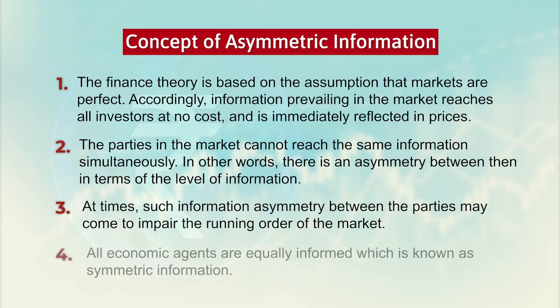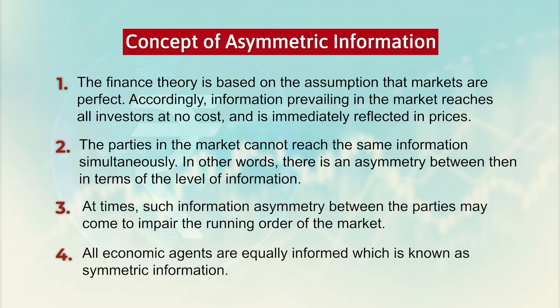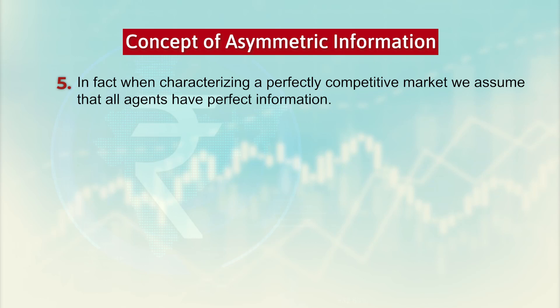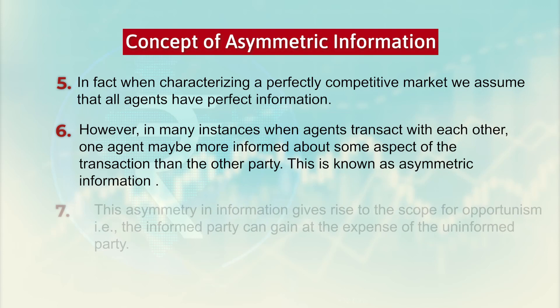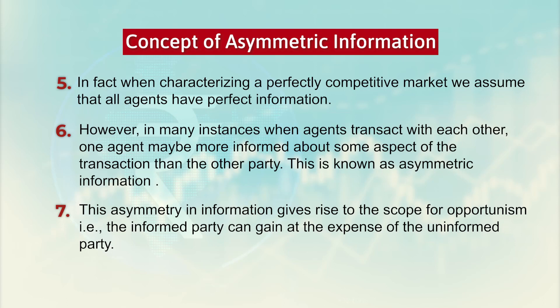When we go by the concept of asymmetric information, we mean that all economic agents are equally informed and if that comes in, then we say symmetric information. But that is possible only in a perfectly competitive market which is very much unrealistic, because here the products are homogeneous and everywhere there is a uniform price prevailing. In real life we may not get this instance because in many instances when agents transact with each other, one agent is more informed than the other. This is called asymmetric information, and it basically gives rise to a scope of opportunities because somewhere one party gains at the cost of the other, making the information more and more skewed.